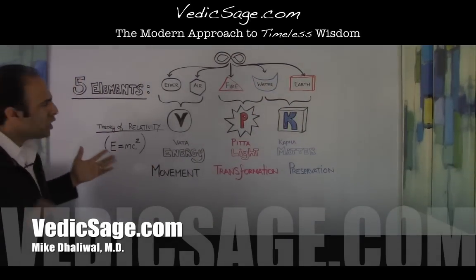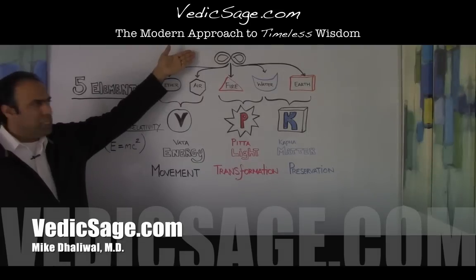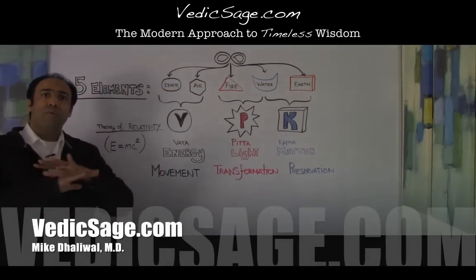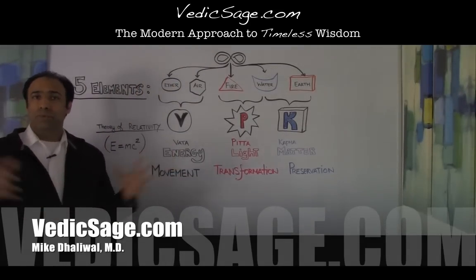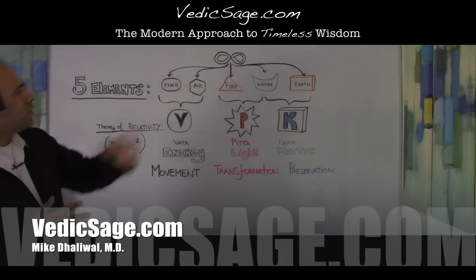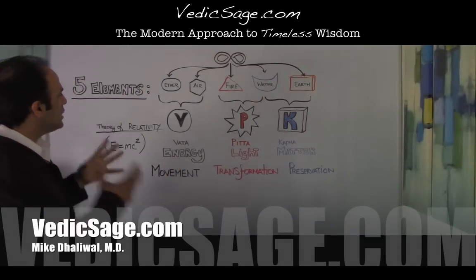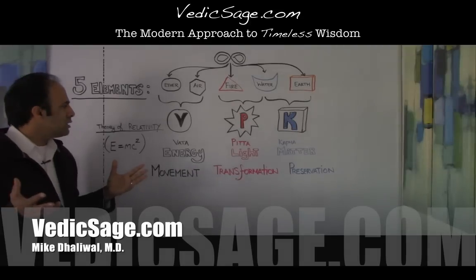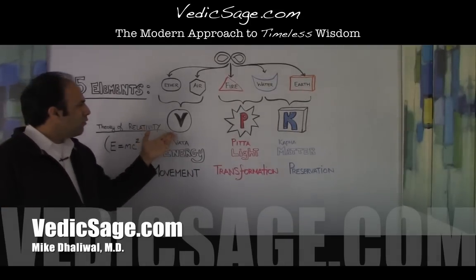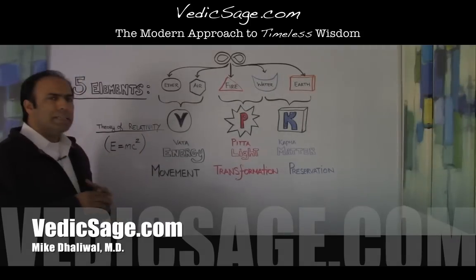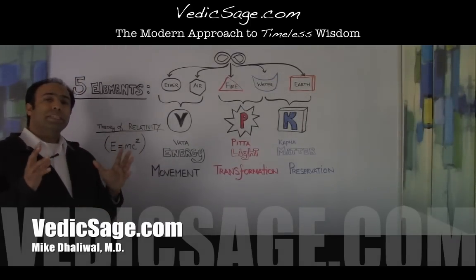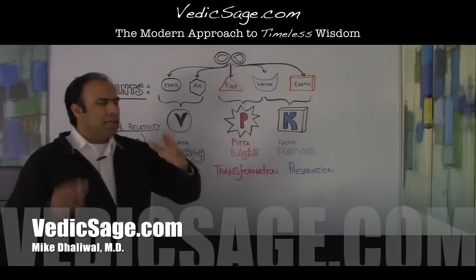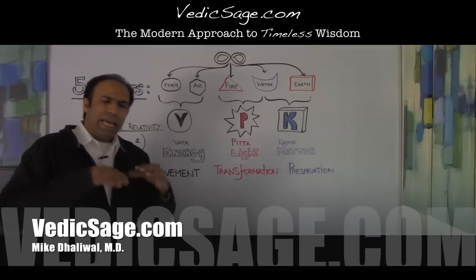In essence, we're starting off with pure unmanifested energy which expresses itself into the five basic elements — ether, air, fire, water and earth — which create the whole fabric of life as we know it. They organize themselves into a group of qualities and characteristics known as doshas: vata being energy and movement, pitta being light and transformation, and kapha being matter and preservation.